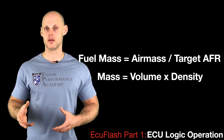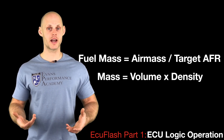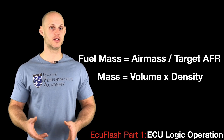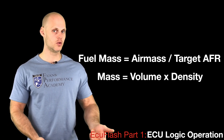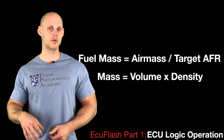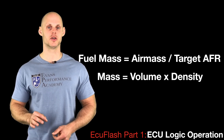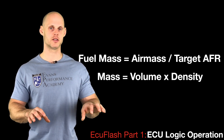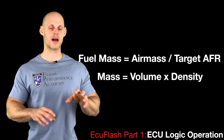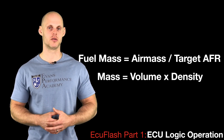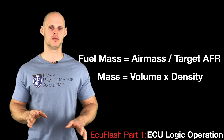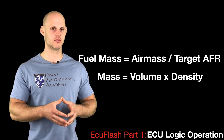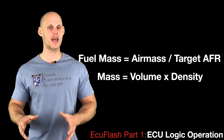As air mass changes, we need to change the amount of fuel mass delivered so that we can hit the target air fuel. That equation is: fuel mass equals air mass divided by target air fuel. It's a circular equation — as our air mass changes with a fixed target air fuel, the fuel mass will change to balance out and hit that target. The ECU is constantly balancing that basic equation. There's a lot more that goes into it, but for tuning purposes we just need to know how it functions.